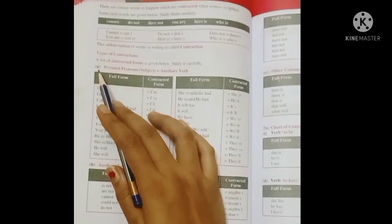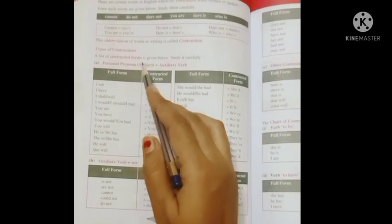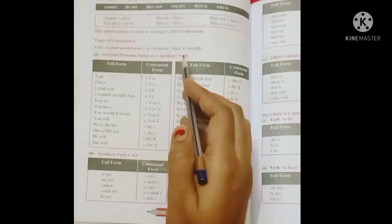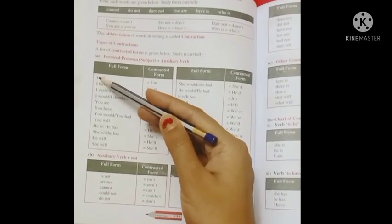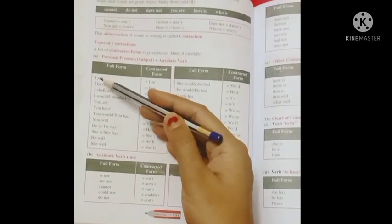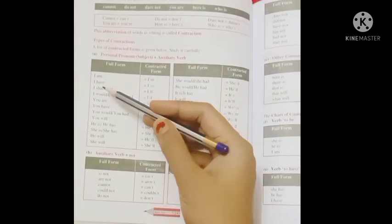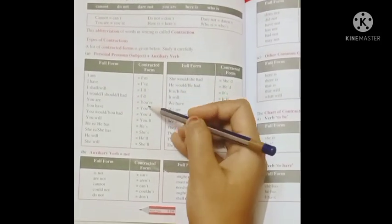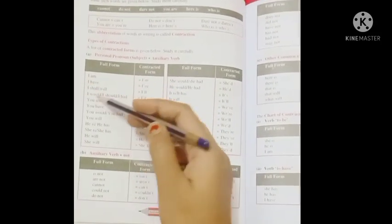Different types of contractions. This is table number A: personal pronoun which is subject plus auxiliary verb. So here we can see the subject and the verb, and here we can see the contracted form of this full form.